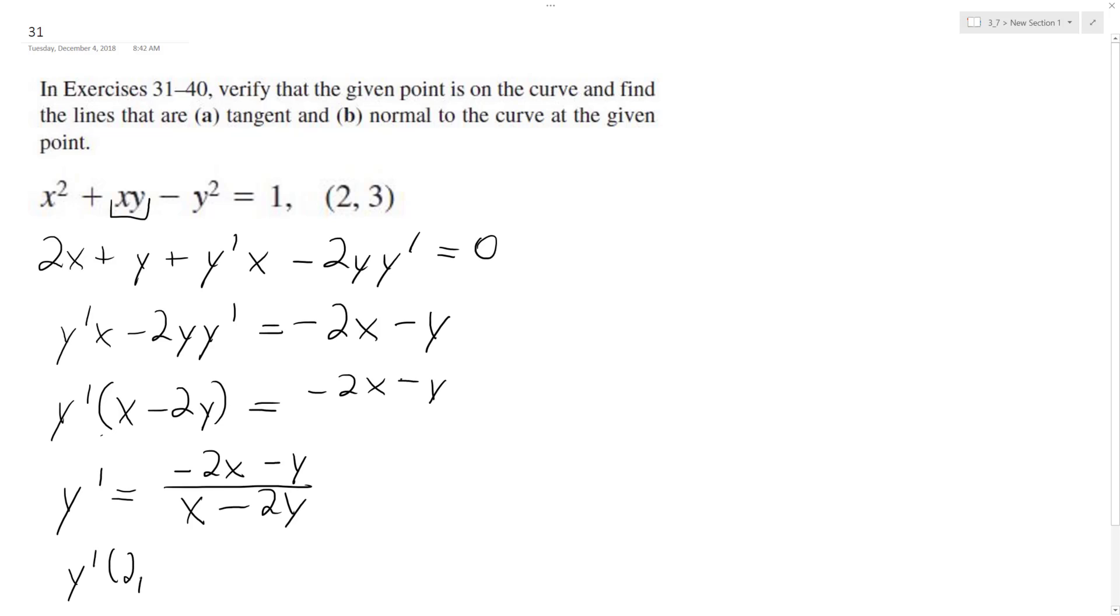So y prime of 2 comma 3 is going to be equal to negative 4 minus 3 over 2 minus 6. So negative 7 over negative 4, 7 over 4.